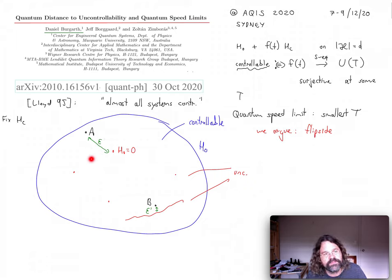And this concept of distance to uncontrollability has been considered in the classical case, and Jeff has worked a lot on this. But in this paper here, which is also on the archive, we look at the quantum version of it.